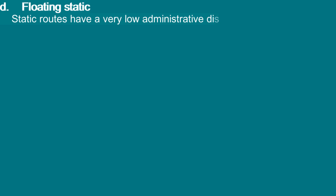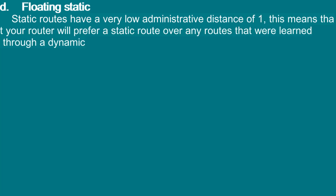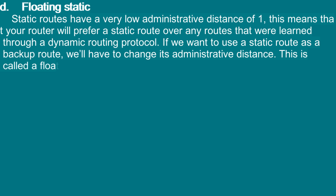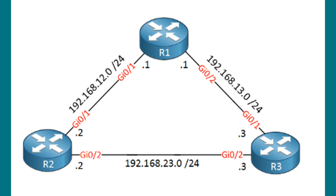D — Floating static: Static routes have a very low administrative distance of 1, meaning the router will prefer a static route over any routes learned through a dynamic routing protocol. If we want to use a static route as a backup route, we'll have to change its administrative distance — this is called a floating static route.